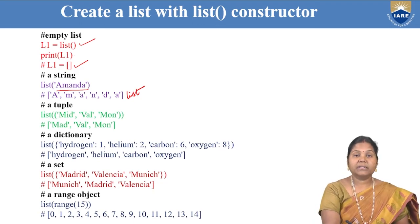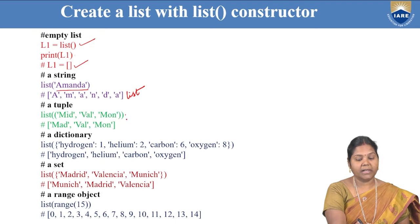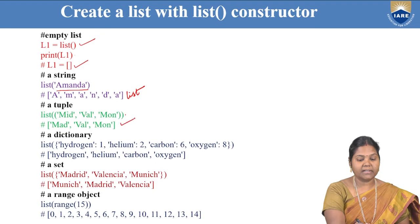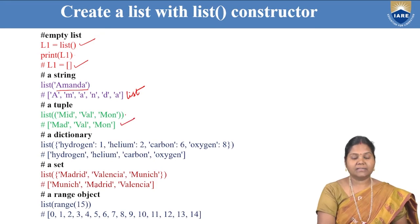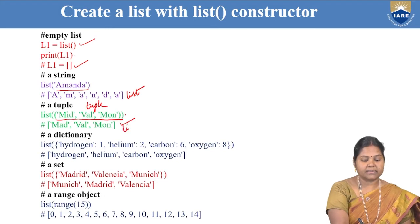From a tuple, you can convert a tuple into a list. For example, a tuple containing 'mid', 'val', and 'monday' — write list() and give the tuple within the bracket, and that tuple is converted into a list.